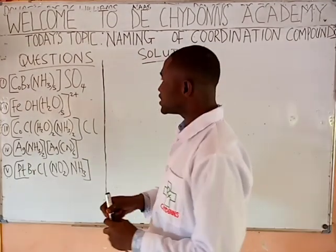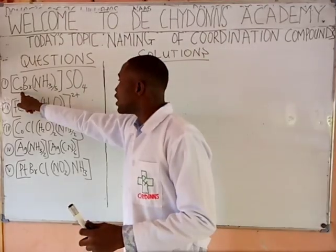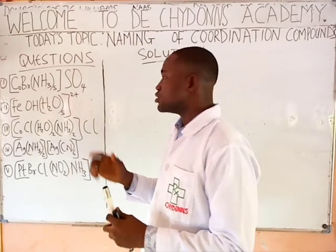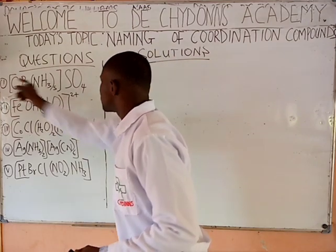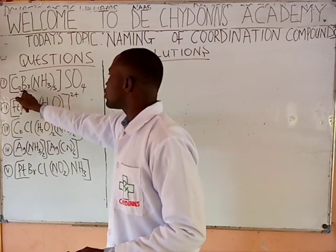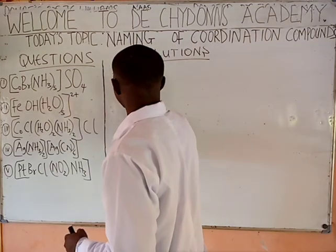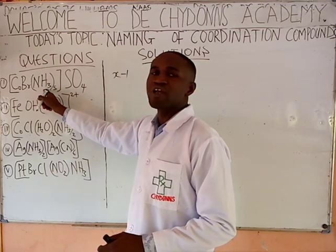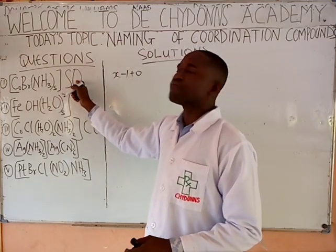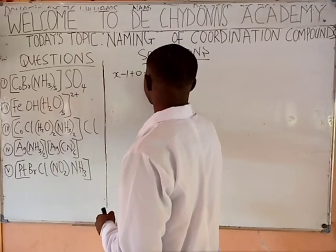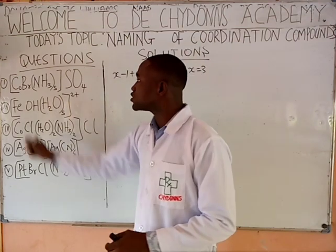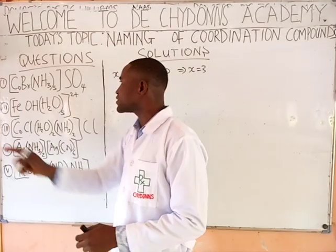Let's see how to get it. Since this is a compound already, the oxidation number of every compound is zero. So you say: X plus the oxidation number of bromine, which is minus one, plus the oxidation number of every neutral molecule, which is zero, plus the oxidation number of sulfate, which is minus two, equals zero. That implies that X equals three. It means that the oxidation number of this cobalt is three.